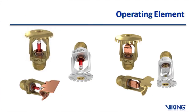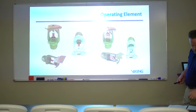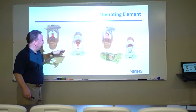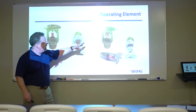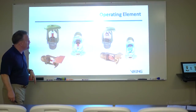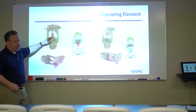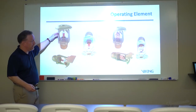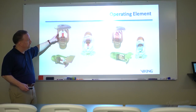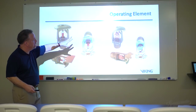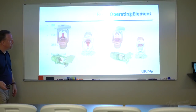To understand quick response, we look at the operating element — glass bulbs and solder link types. A red glass bulb indicates an ordinary temperature rating in the range of about 155 degrees. The same applies to solder link sprinklers. Both come in quick response and standard response versions.